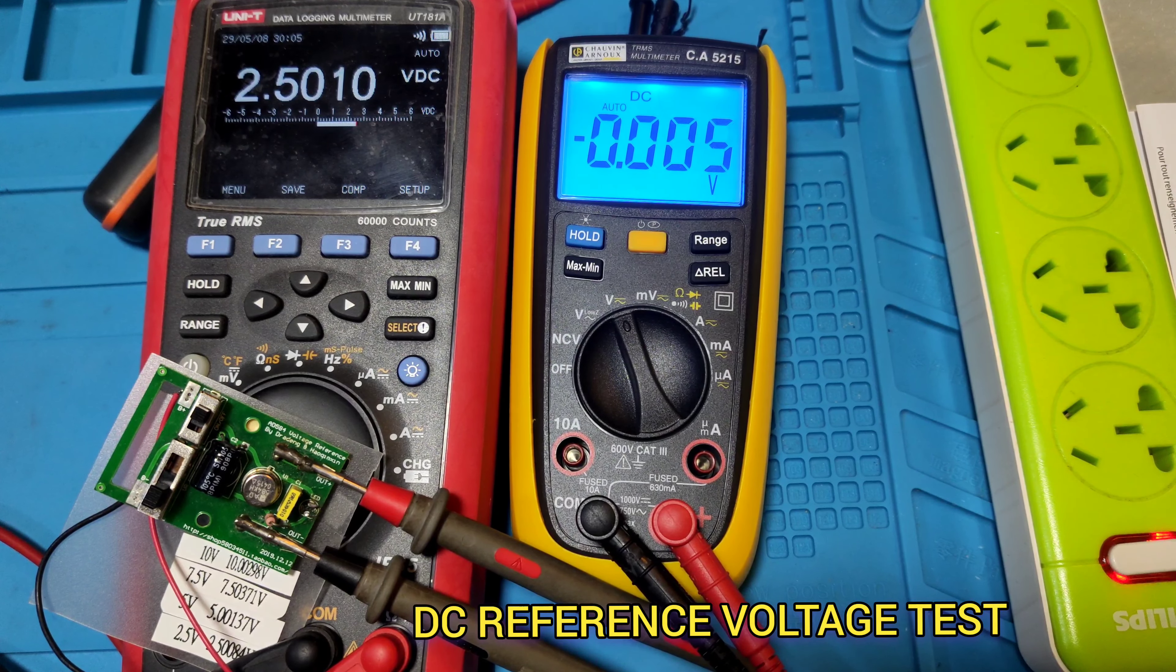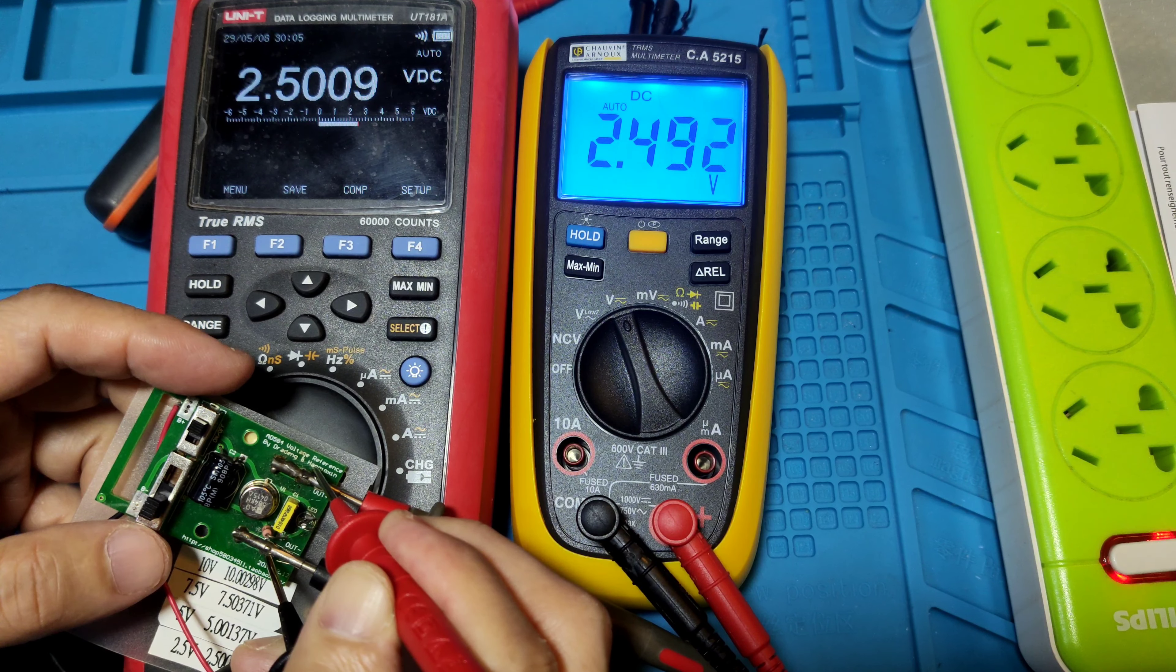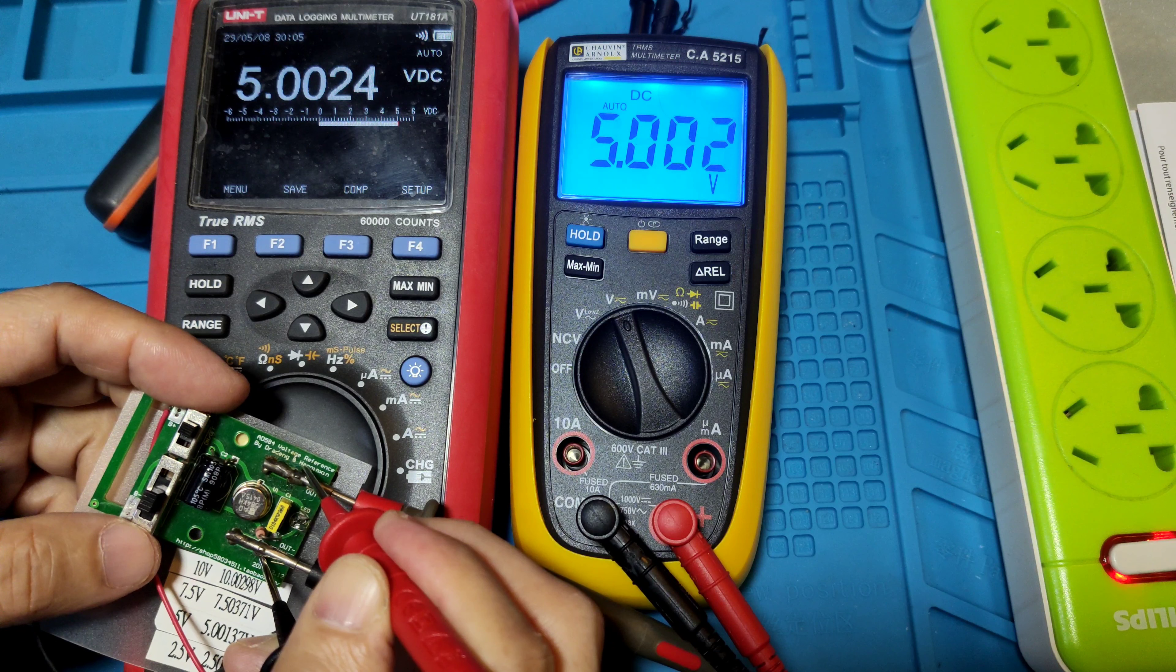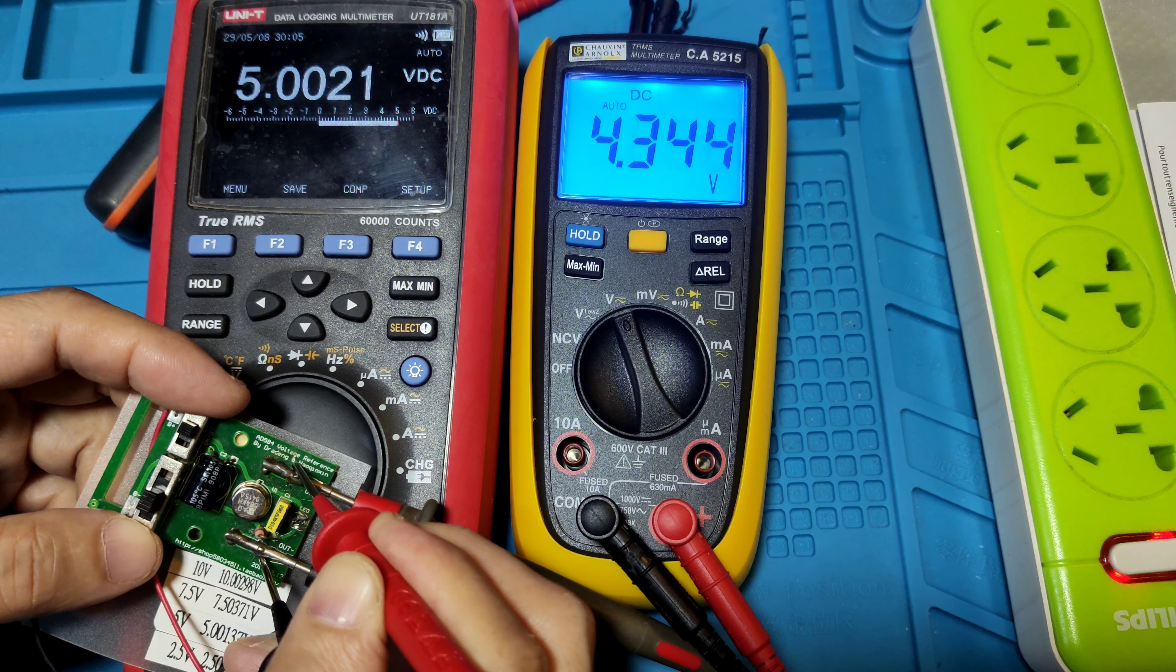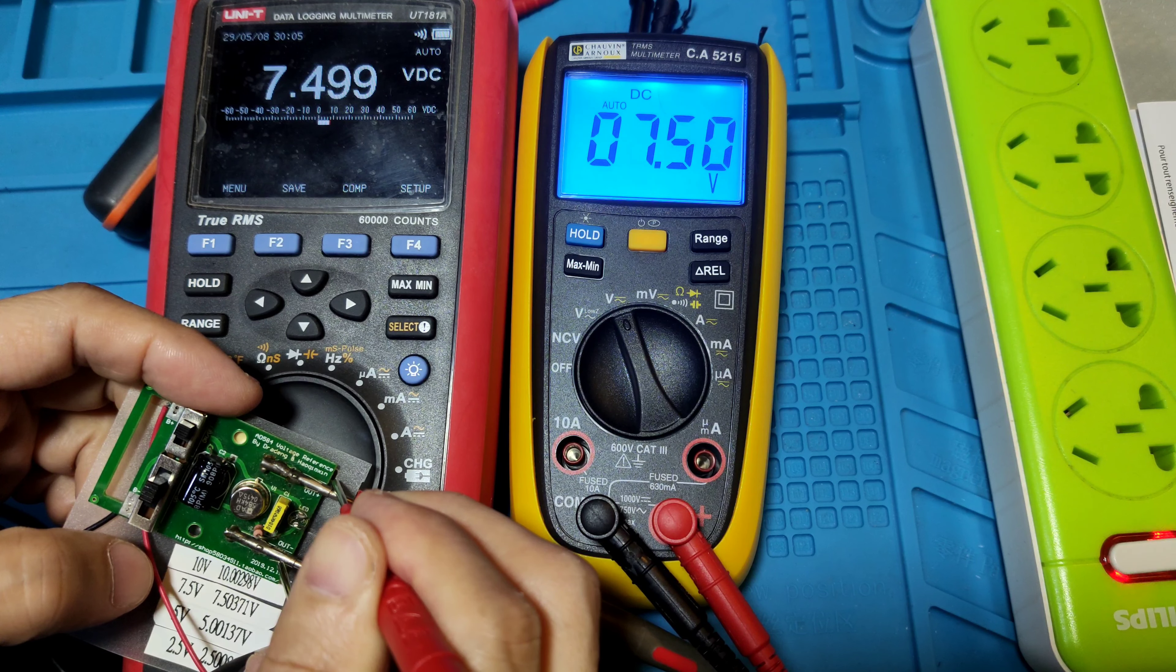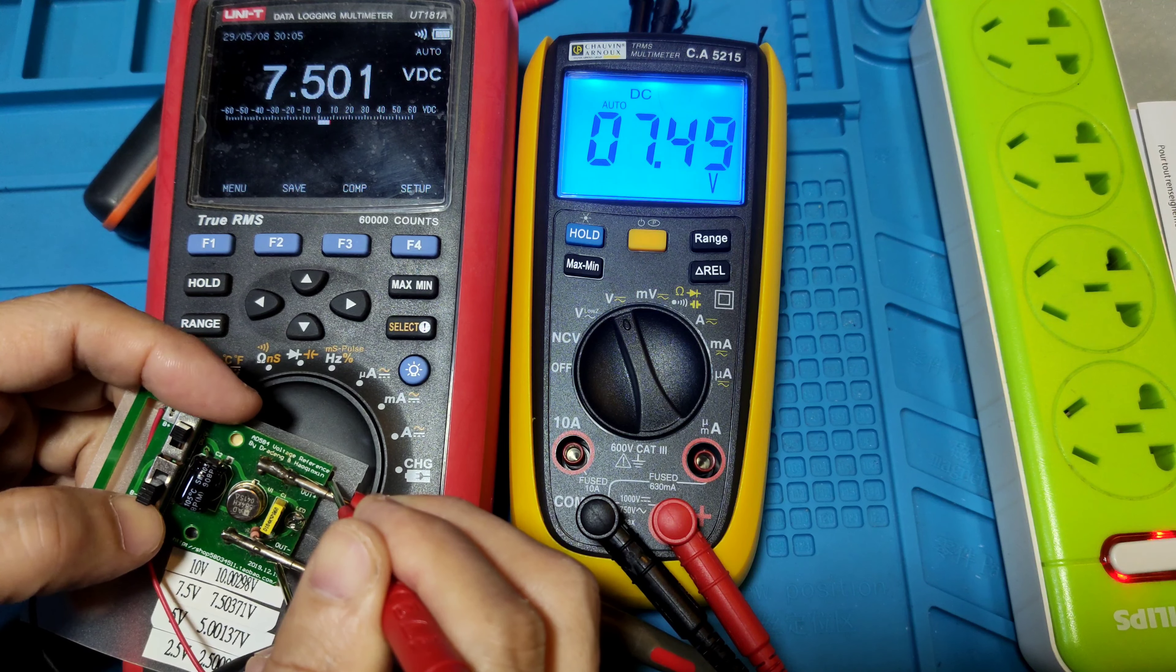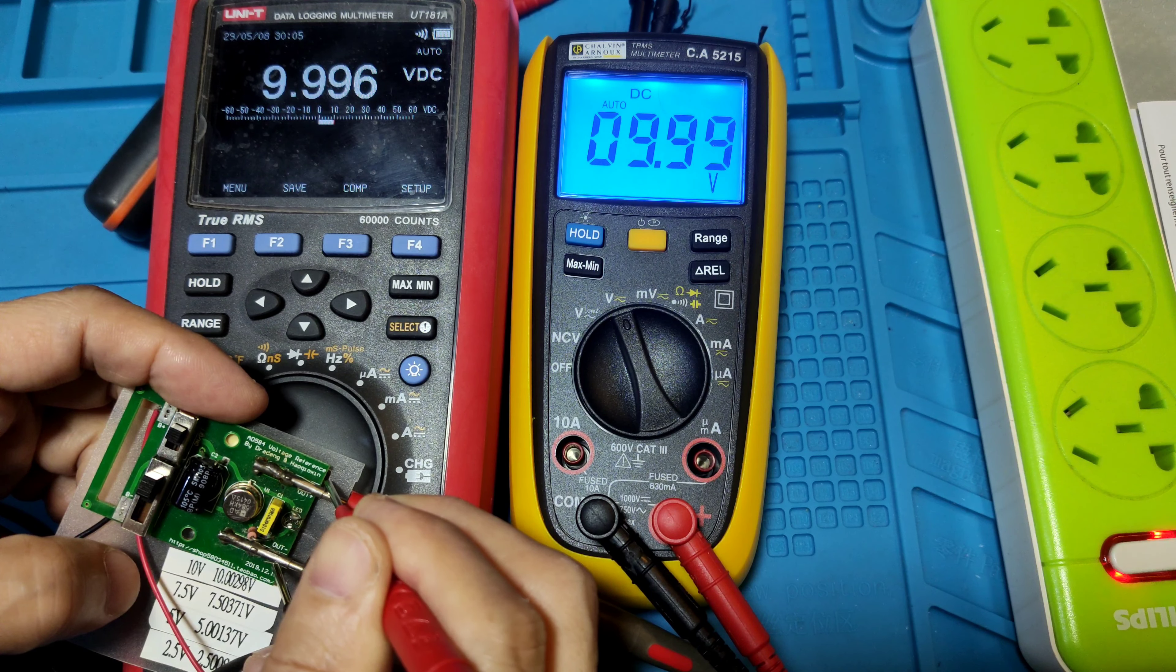Let's test the meter with DC voltage test. 2.5 volts, it shows 2.502 volts. 5.0 volts, it shows 5.003 volts. 7.5 volts, it shows 7.49 volts - near the reading. 10 volts, it shows 9.99 volts.